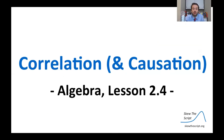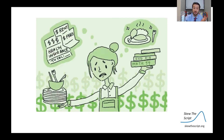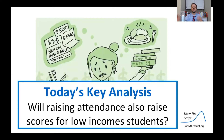Welcome to lesson 2.4 for Skew the Script. Today we'll be talking about correlation and causation. Specifically, we'll be discussing education, which can often be a challenge for low-income students — sort of a balancing act: making sure to pay rent, health insurance, putting food on the table, working side jobs. It can be difficult, and our main question today will be if schools in America effectively and successfully equalize opportunity for low-income students. Specifically, we'll be thinking about this through the window of attendance, and our key analysis today will be if raising attendance will also raise scores for low-income students.